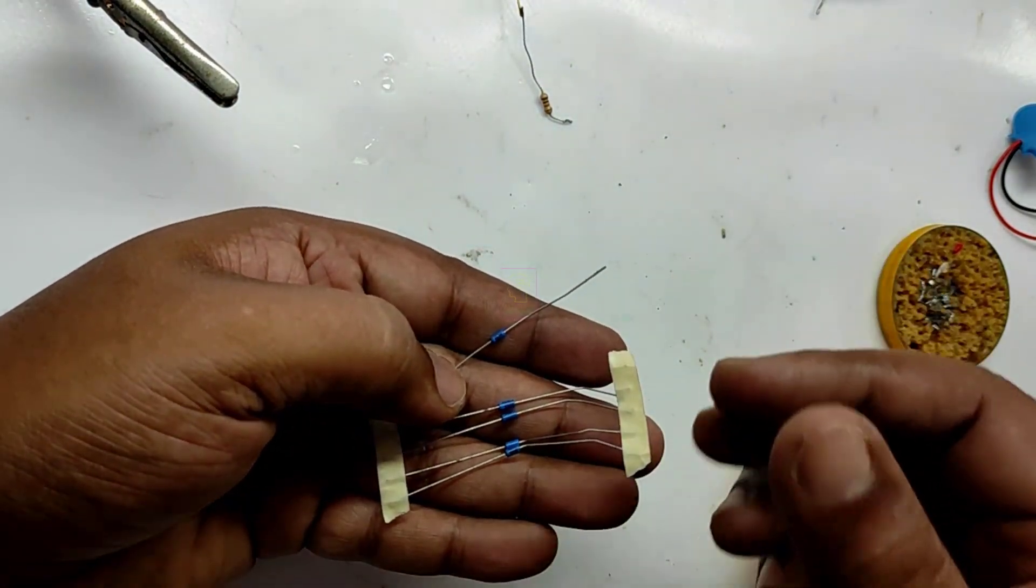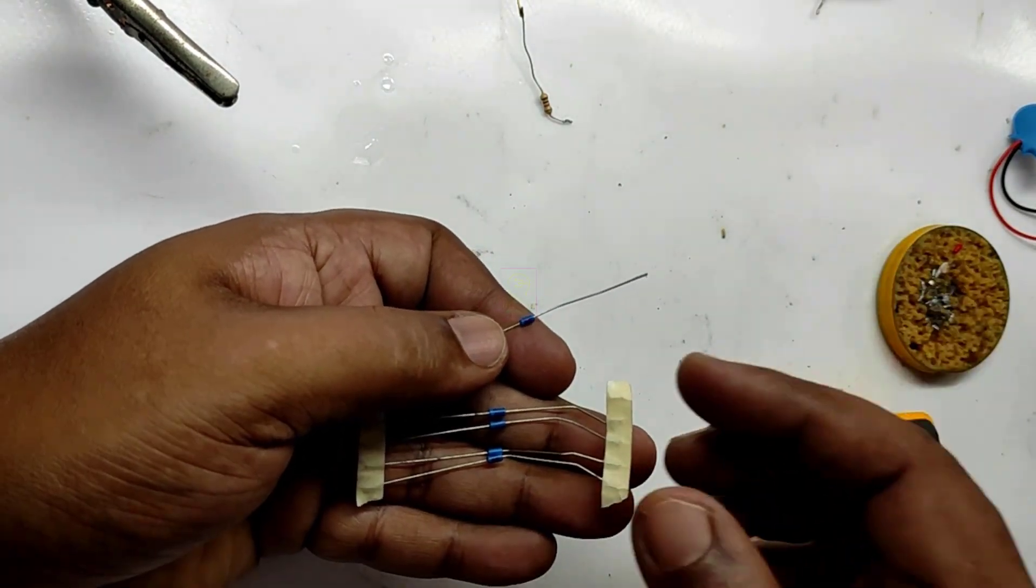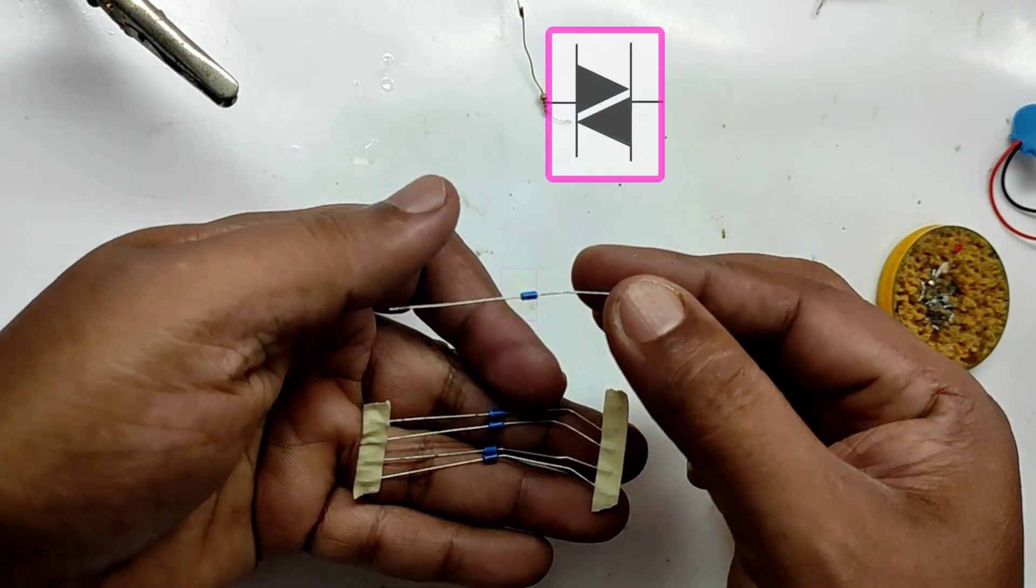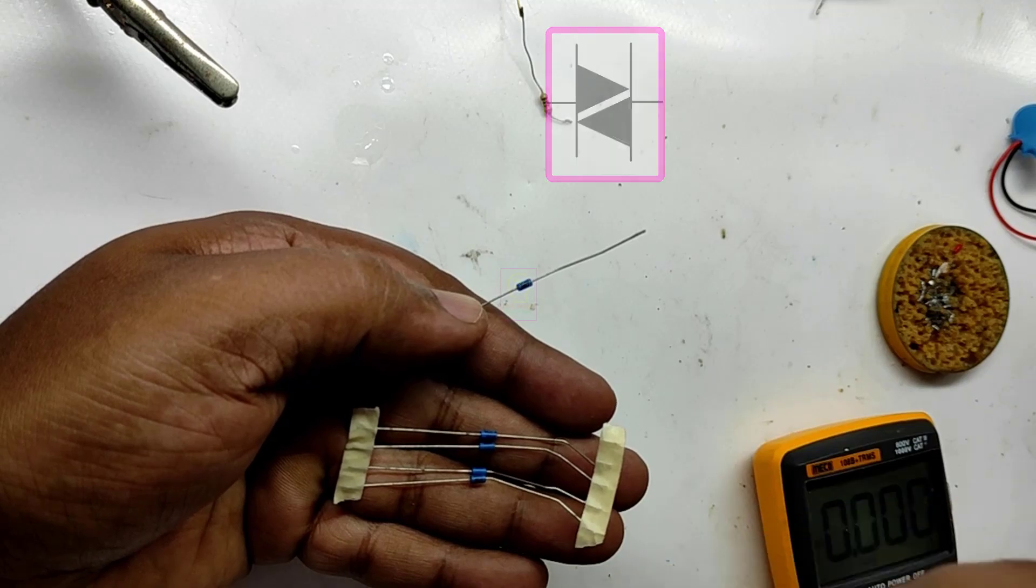Its working principle is similar to a zener diode. Unlike a zener diode, it has no polarity. This is the symbol of a DIAC - you can see it is similar to two diodes connected to each other face to face.